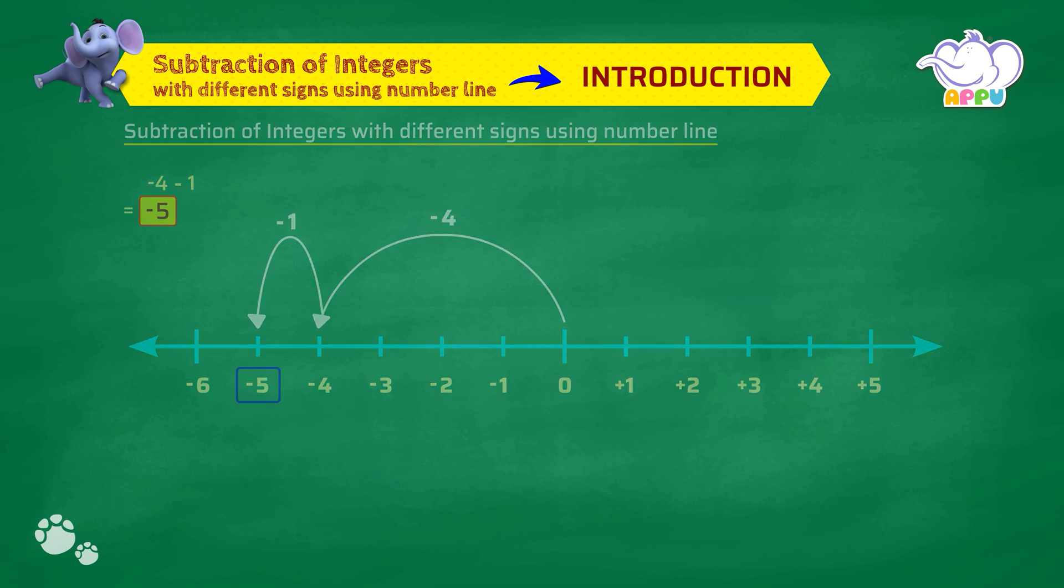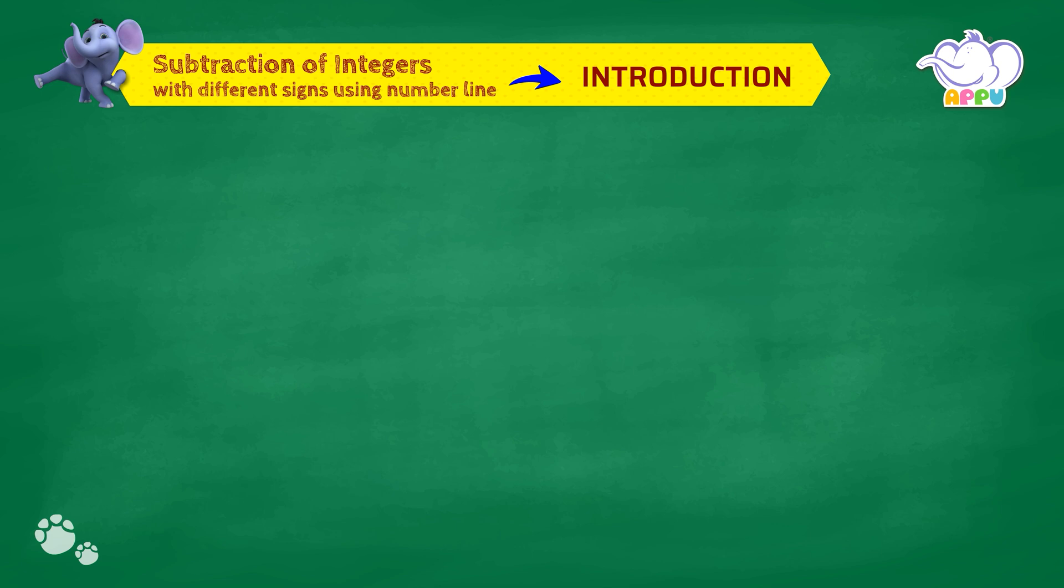Let's look at another example. To subtract integers having different signs using the number line. 5 minus minus 2. Here, 5 is a positive integer and minus 2 is a negative integer.